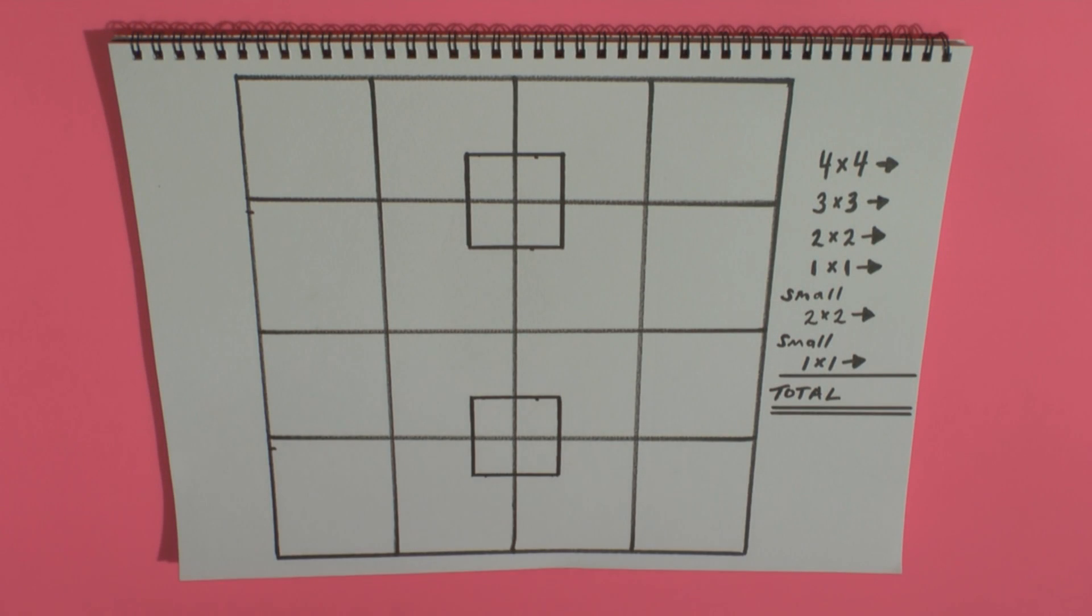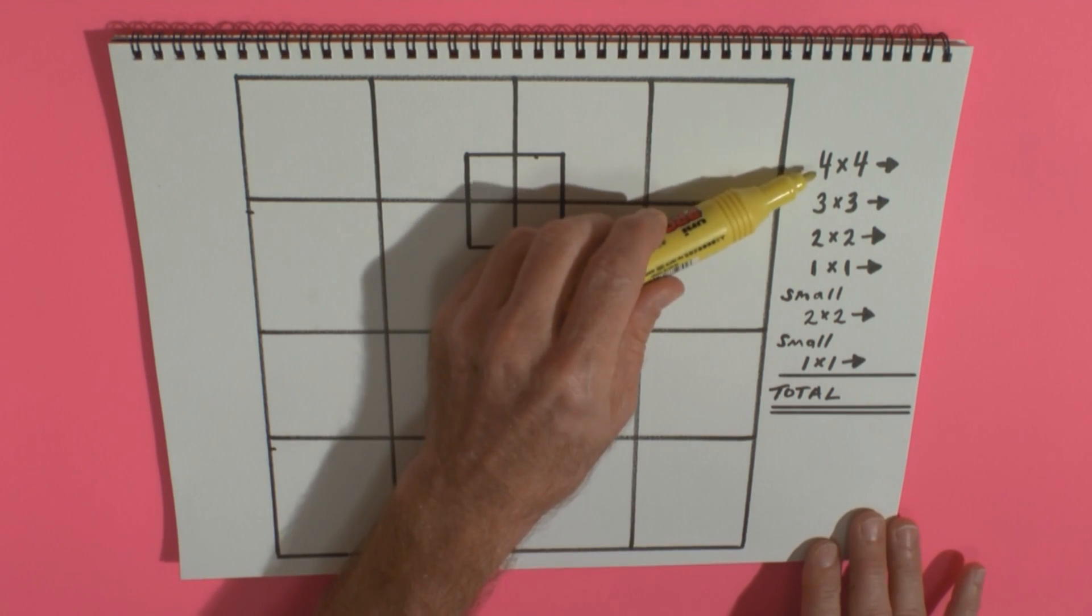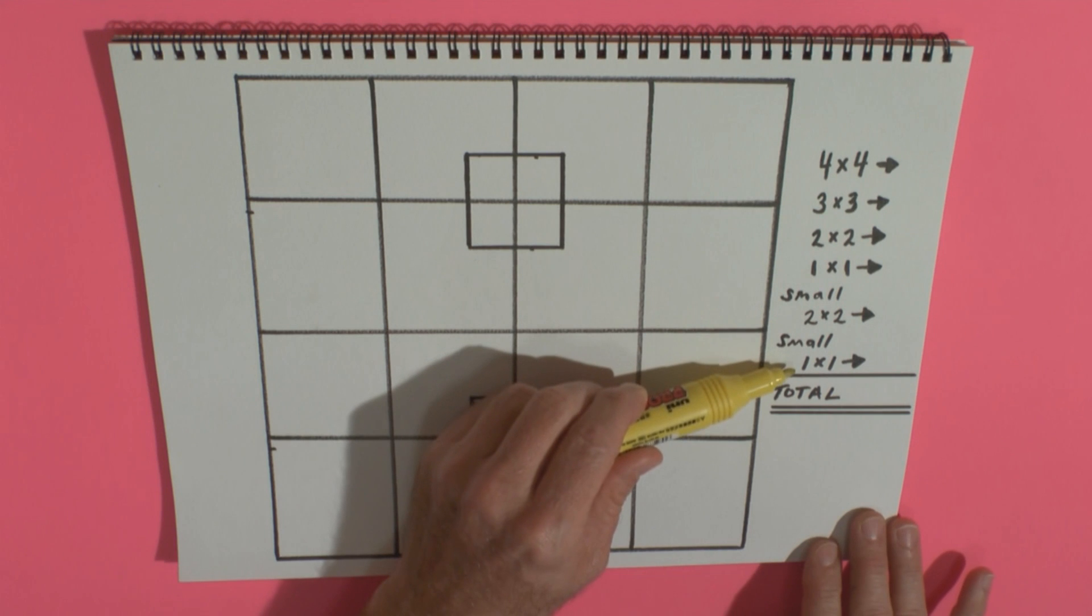What's up? This is the solution to the how many squares puzzle. Now, what I've done here is identified the six different types of squares.